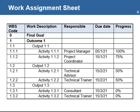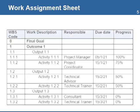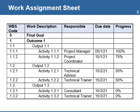The work assignment sheet is a simple tool to manage the assignment of all work in the WBS to the people responsible for them. The responsibility for each task or activity in the WBS should be assigned to only one person. The assignment sheet shows all the activities, the name of the person responsible, the due date, and the progress made in completing the activity. The work assignment sheet facilitates identification and monitoring of the responsibilities in scope management.